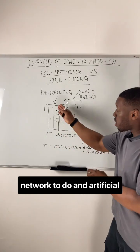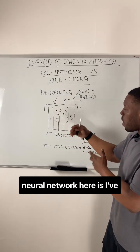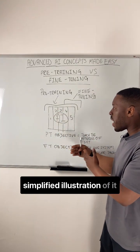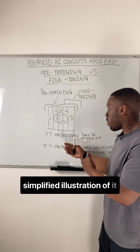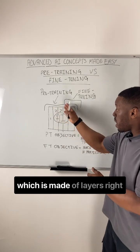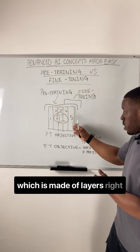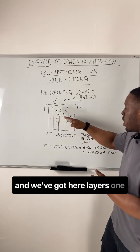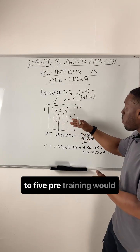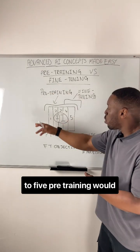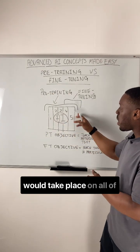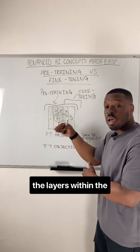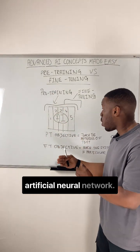The artificial neural network here — I've given a very simplified illustration of it — is made of layers. We've got here layers one to five. Pre-training would take place on all of the layers within the artificial neural network.